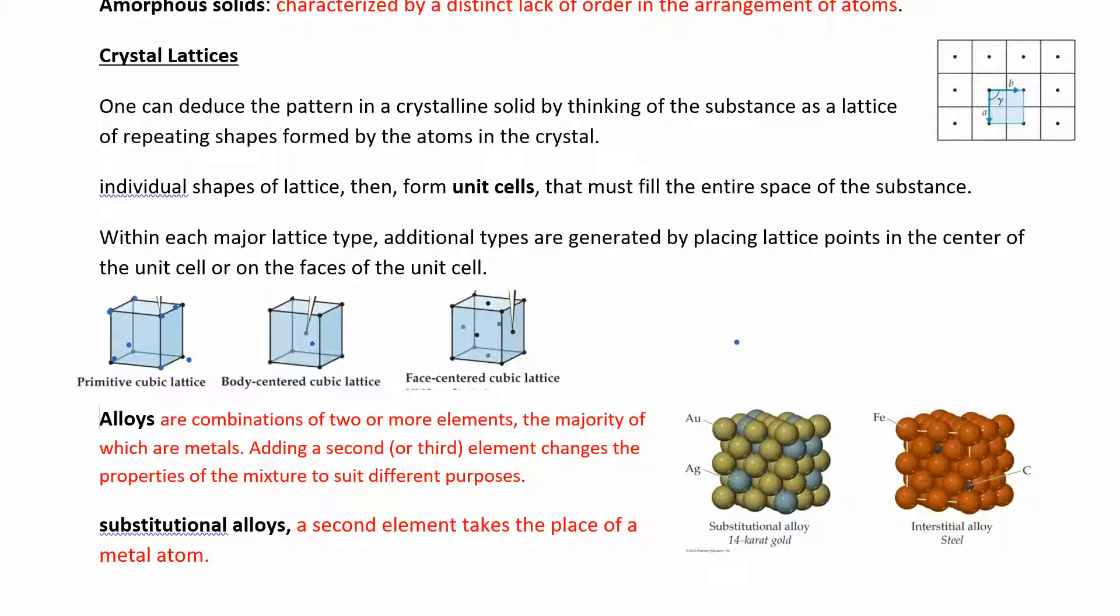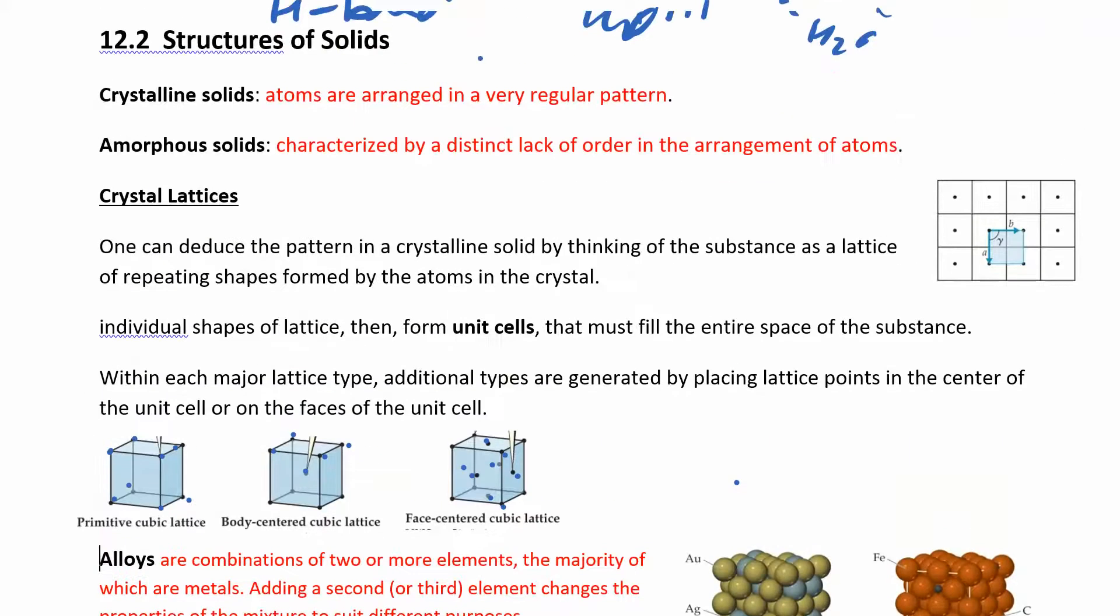And then that would just keep repeating over and over again. So that's kind of what that's showing over there. You could also have a body centered cubic lattice where you have an atom or molecule or whatever is repeating itself over each one on the corner. And then you have one in the middle and then a face centered cubic because we have one on each corner, but then also one on each face of this cube. And that's what repeats itself over and over again. So you have these different types of cubic lattices, primitive body centered face. And I believe there's even more, we're just going to look at these three. And that's kind of what makes up your crystalline solid.